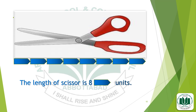Now, students, we measure the length of these scissors by using arrows: 1, 2, 3, 4, 5, 6, 7, 8. The length of the scissors is 8 arrow units.